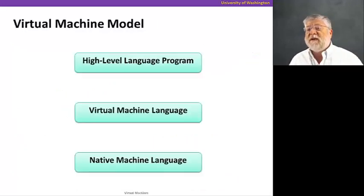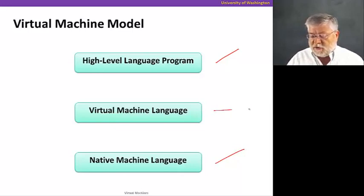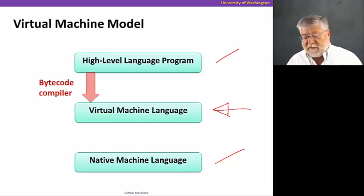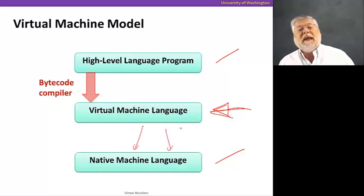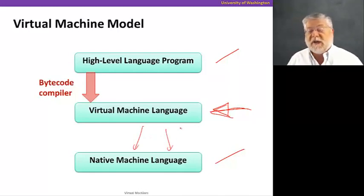If we look at this pictorially, we have a high-level language program written in a language like Java, a native machine language, the machine code and instructions for a particular CPU, and the virtual machine language sits somewhere in the middle. We can have a bytecode compiler that turns our high-level language into this virtual machine language. From there, we can go to different CPUs, for example, and easily retarget our code.